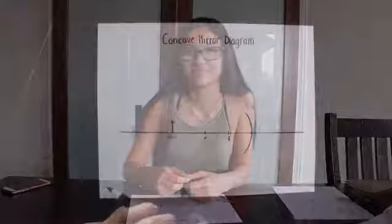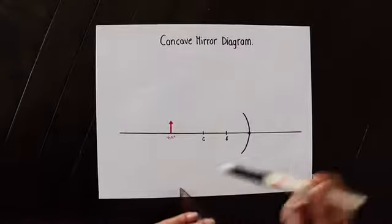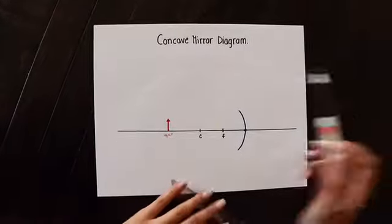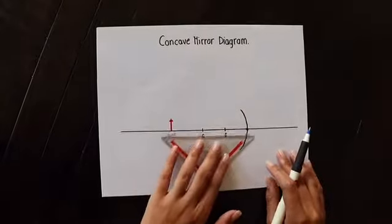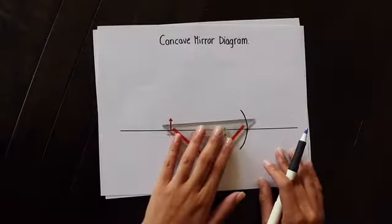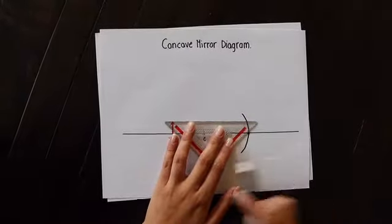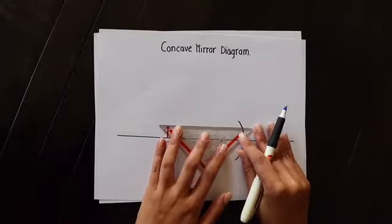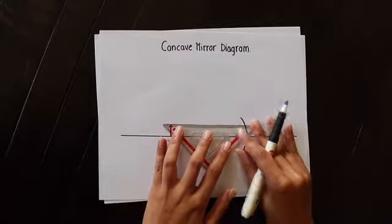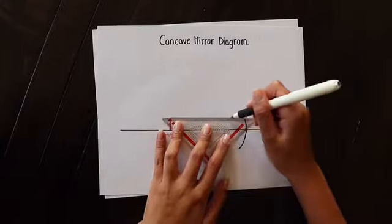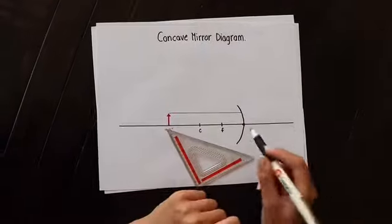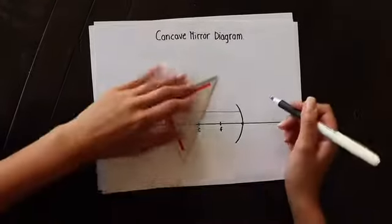The first thing we're going to talk about in optics is how to draw lens and mirror ray diagrams. Each diagram has three rays, so first we're going to start with concave mirror diagrams. The first ray, you're going to start with having it parallel to the axis and draw it straight to the mirror. Then it's going to reflect off the mirror through the focal point.